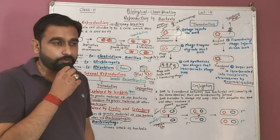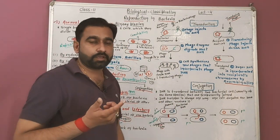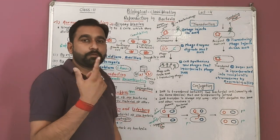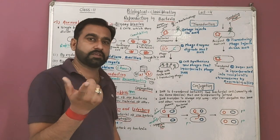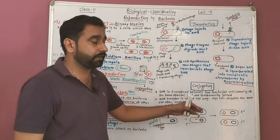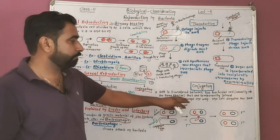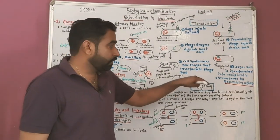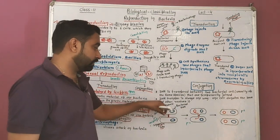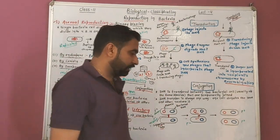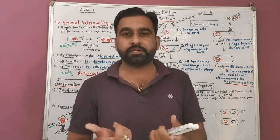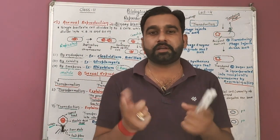There are different types of conjugation — like Hfr+ × F+, Hfr+ × F−, F+ × F− — which you will study in higher classes. But for the NEET examination, only this much is asked about conjugation. The key thing to remember is that the conjugation tube is called a cytoplasmic bridge, and pili help in its formation.